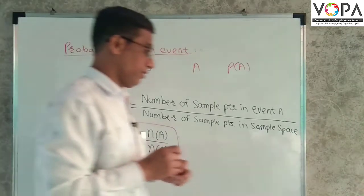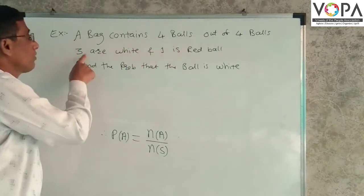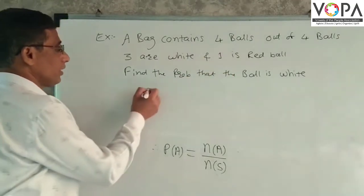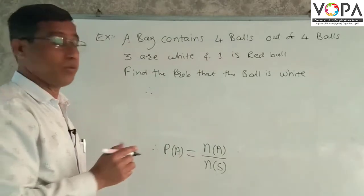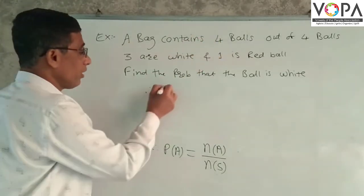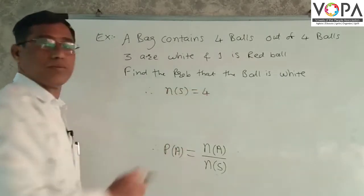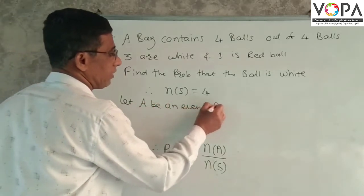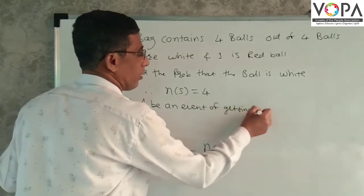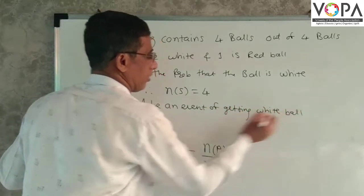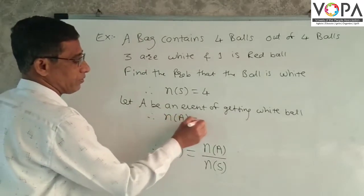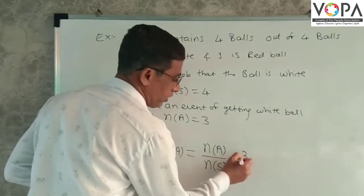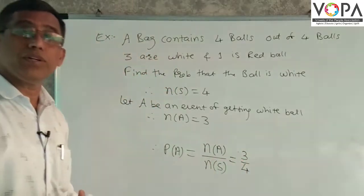Now, we take one example. A bag contains four balls. Out of four balls, three are white and one is a red ball. Find the probability that the ball is white. Total number of balls is four. Therefore, sample space contains four balls, so N of S is equal to four. Let A be an event of getting a white ball. Therefore, N of A is equal to three. Therefore, probability of A means N of A upon N of S, means three upon four. So, three by four is the probability of A.